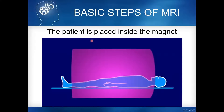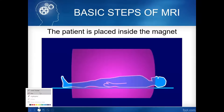The basic steps of MRI: number one, the patient is exposed to a strong magnetic field — specifically to the primary magnet. The strong magnetic field is inhomogeneous, which is why we need to use the shimming coil. The purpose is to attract the hydrogen protons in the patient's body.